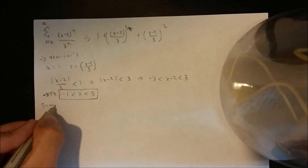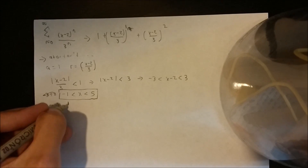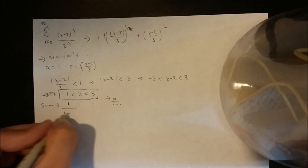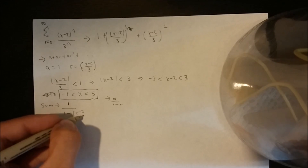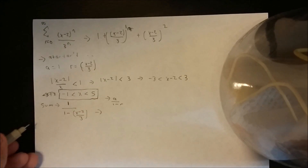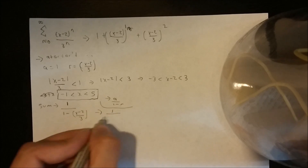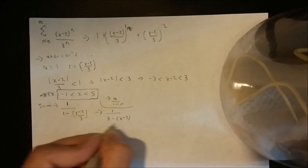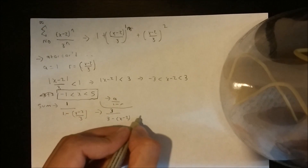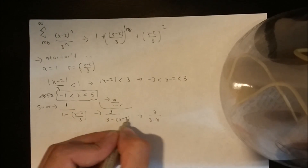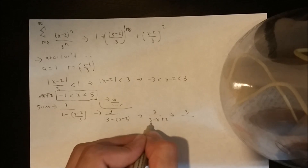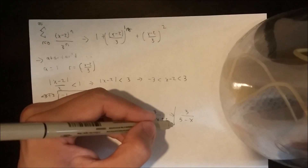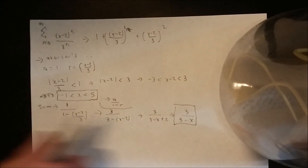Now we want to find the sum. The formula is a over 1 minus r, so we have 1 over 1 minus x minus 2 over 3. We simplify by multiplying numerator and denominator by 3, giving us 3 over 3 minus x minus 2, which is 3 over 3 plus 2 minus x, so 3 over 5 minus x. This is the sum of the series for those x values.